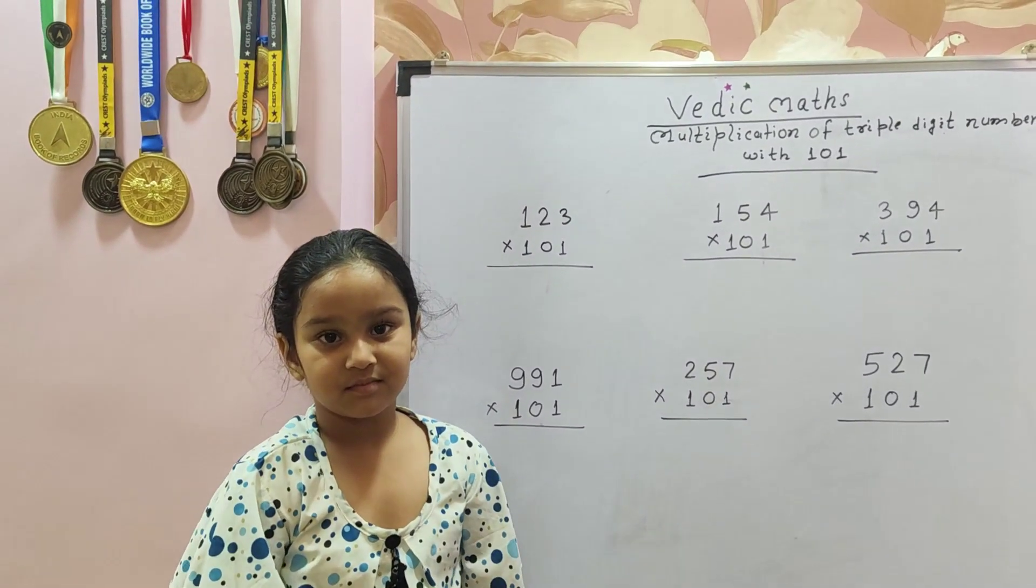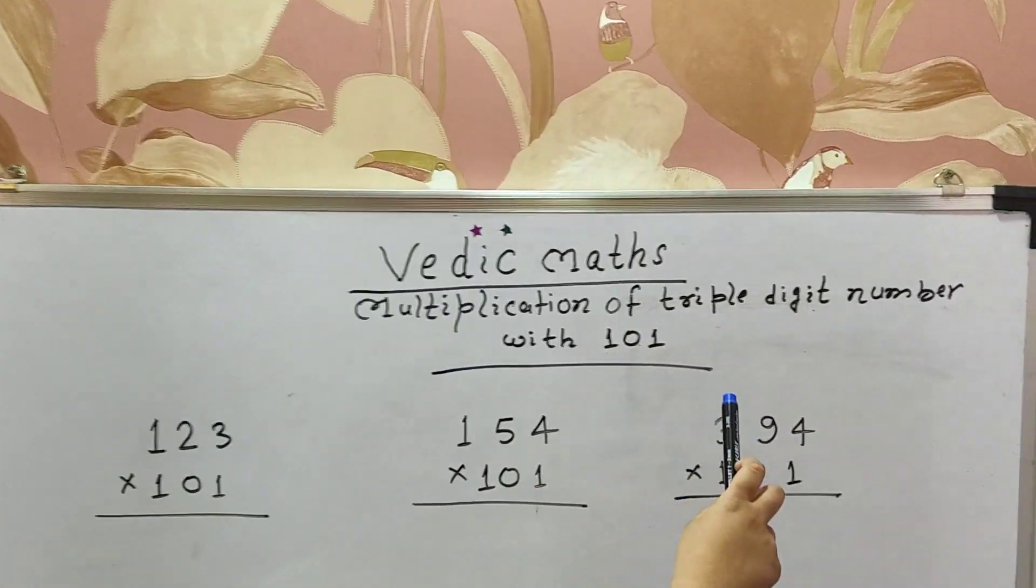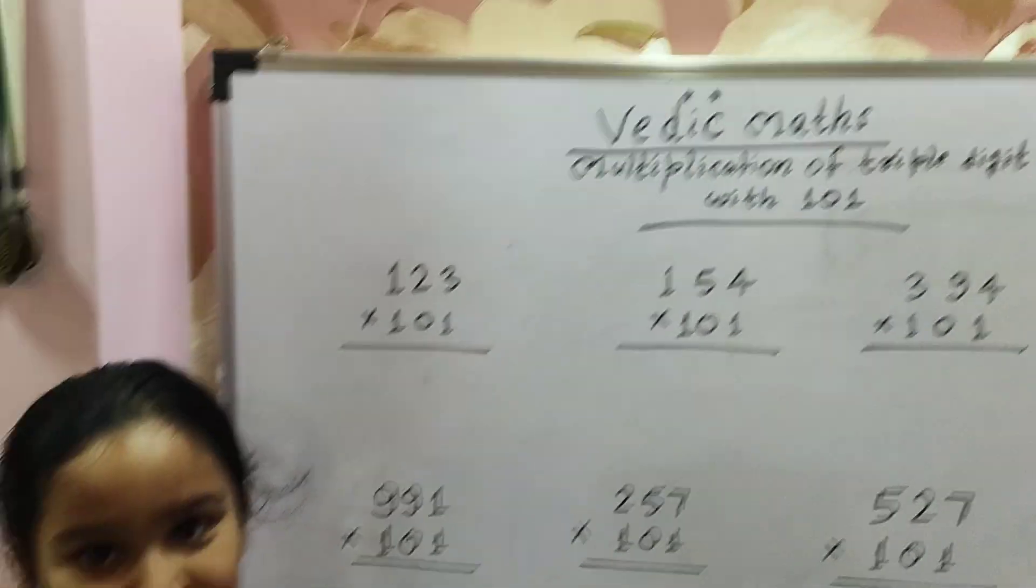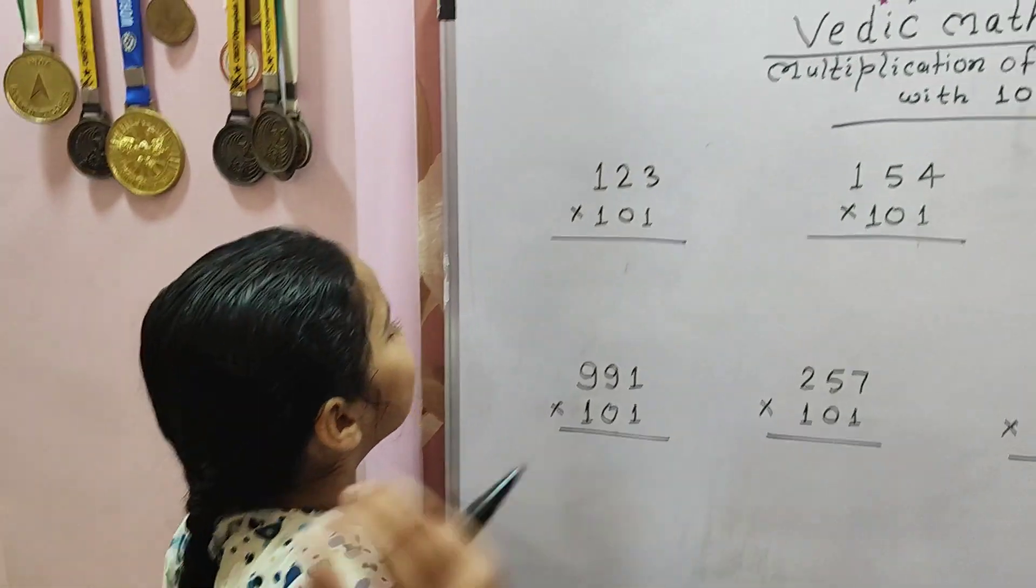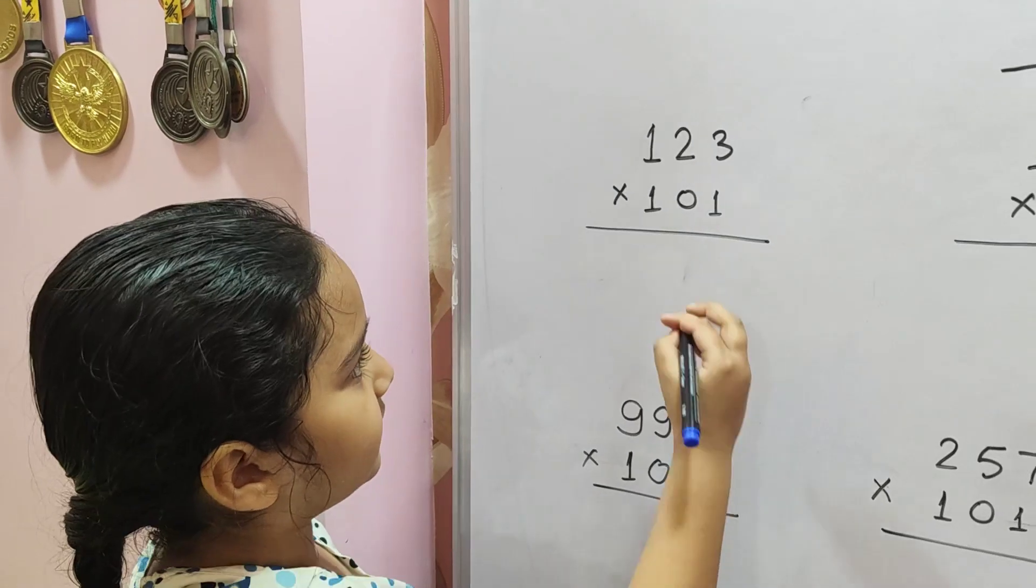Hello, what are you teaching today? Today I am going to teach multiplication of triple digit numbers with 101. So let me start. So there is 123 and 101, so the answer is going to be...